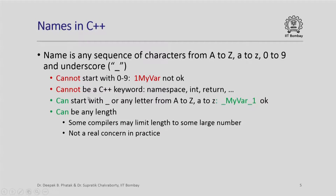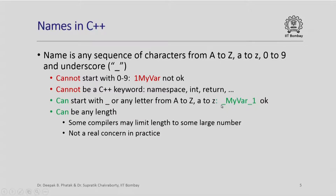Similarly, a name cannot be a C++ keyword. We have already seen certain keywords like namespace, int, return and so on, so you cannot use any of these keywords. Although they are a sequence of characters from the allowable characters, because they are reserved keywords they cannot be used for names. A name can start with underscore or it can start with any letter from uppercase A to uppercase Z or lowercase a to lowercase z. For example, you can have a variable named '_mybar1'. A name can usually be of any length; however, some compilers may limit the length to some large number, but in reality this is not really a practical concern.